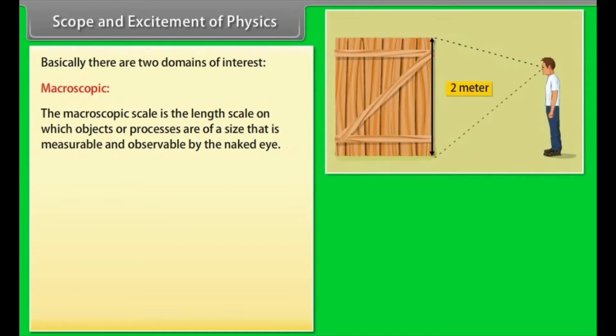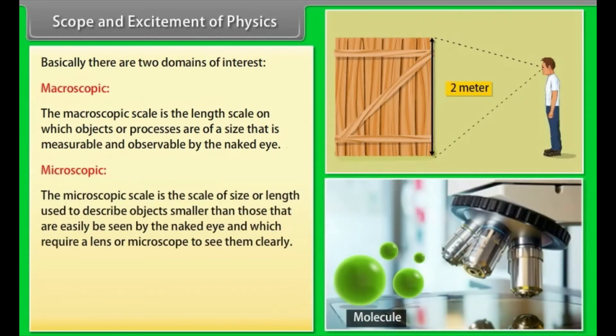The macroscopic scale is the length scale on which objects or processes are of a size that is measurable and observable by the naked eye. The microscopic scale is the scale of size or length used to describe objects smaller than those that can easily be seen by the naked eye and which require a lens or microscope to see them clearly.